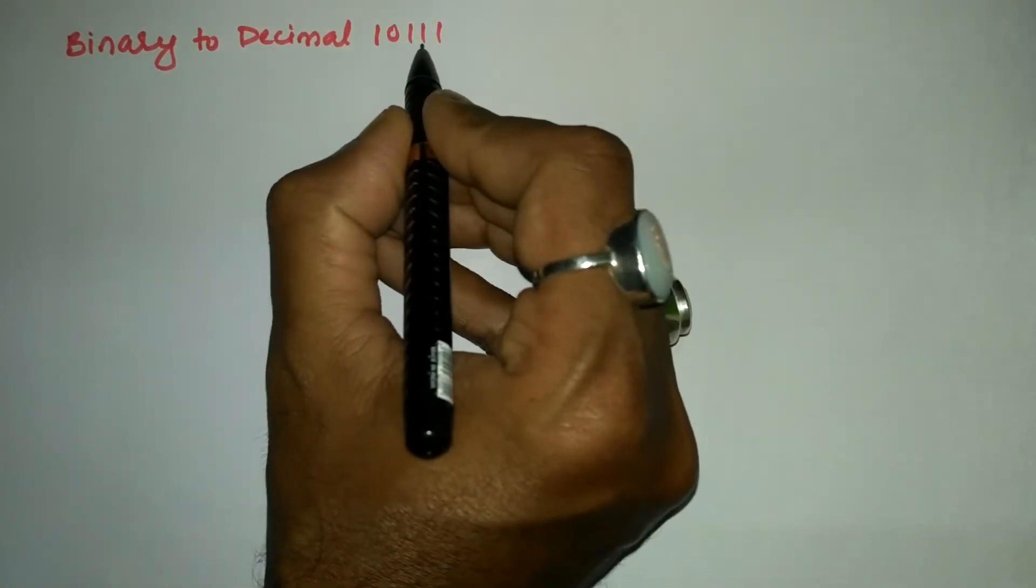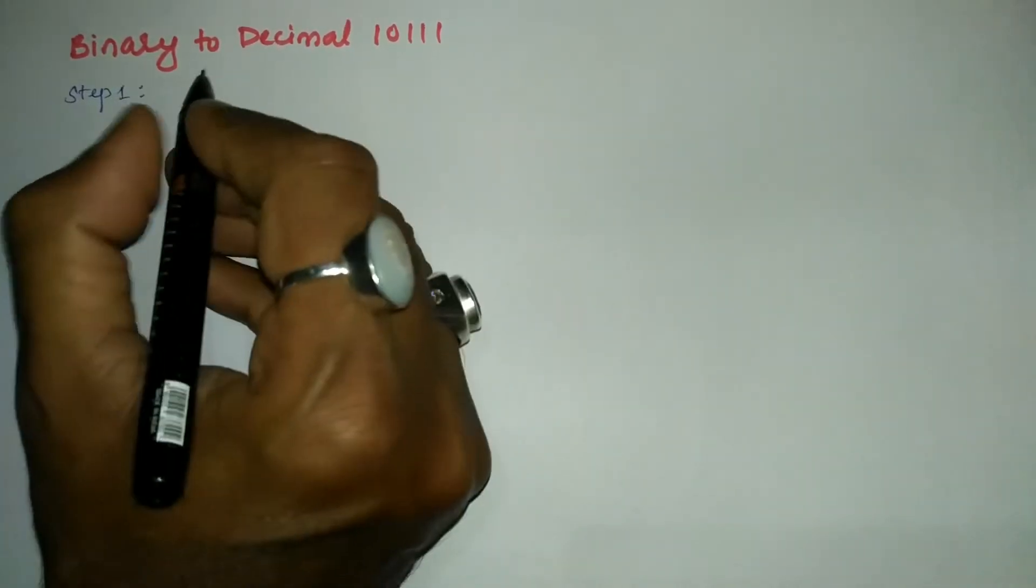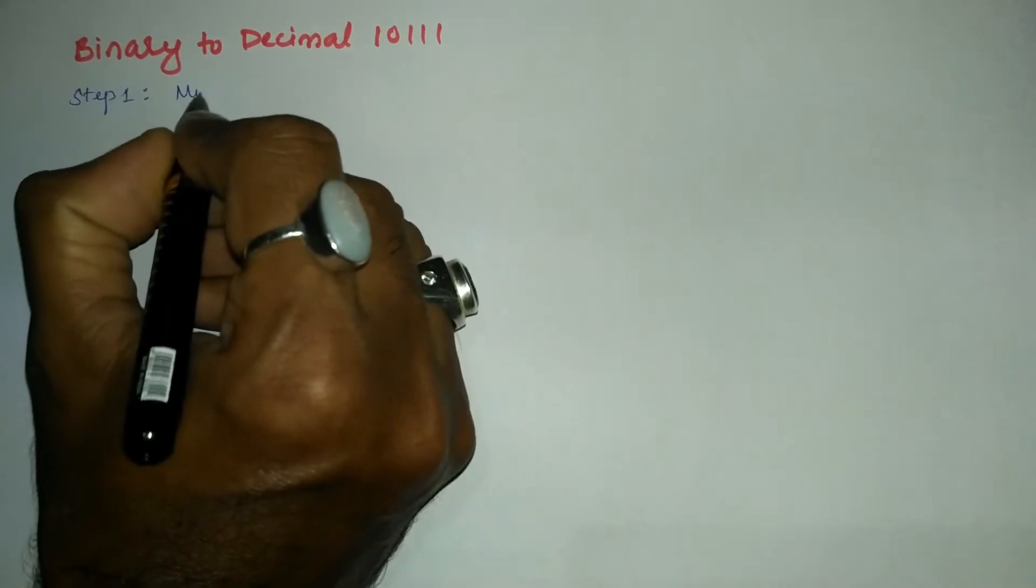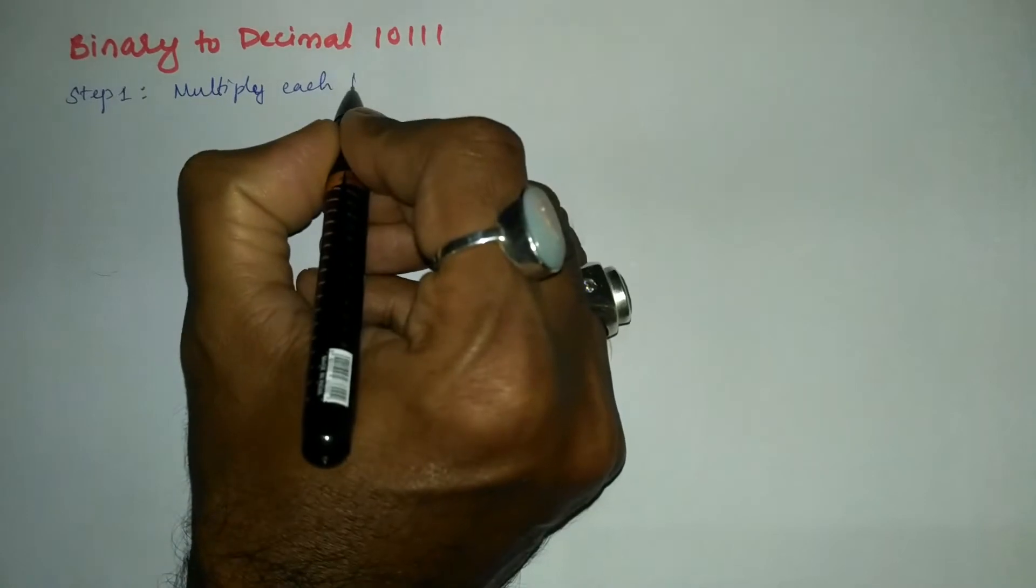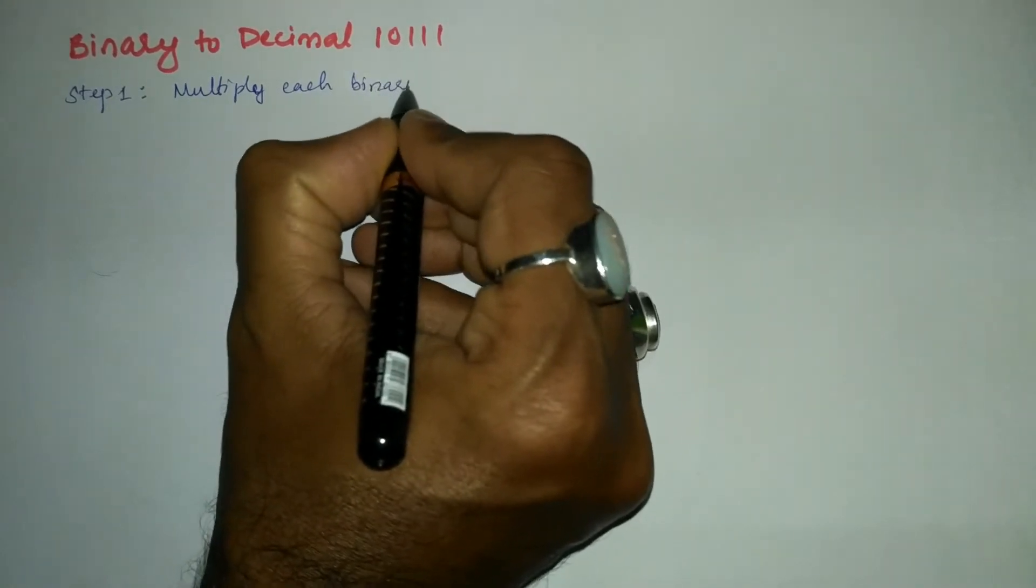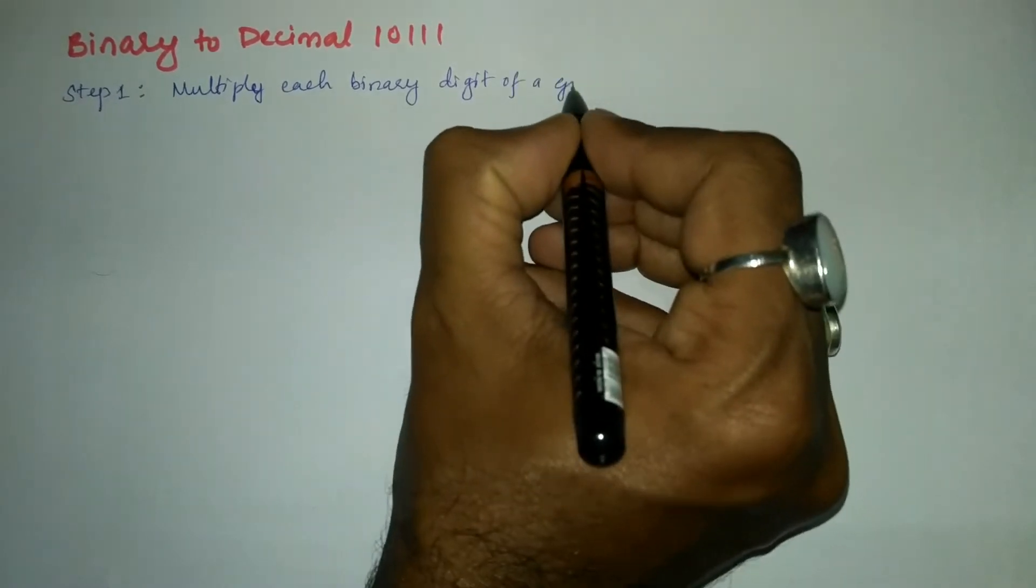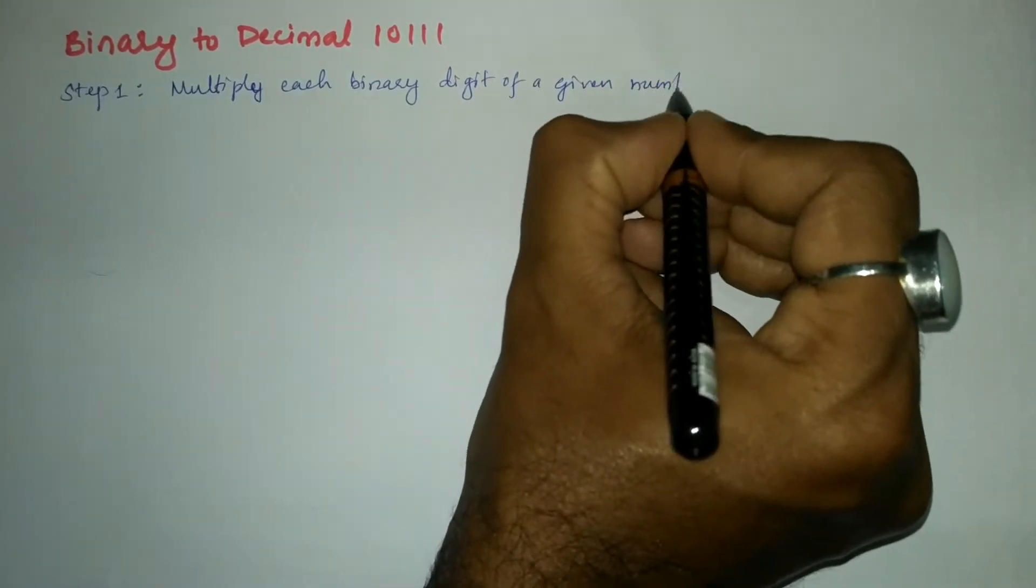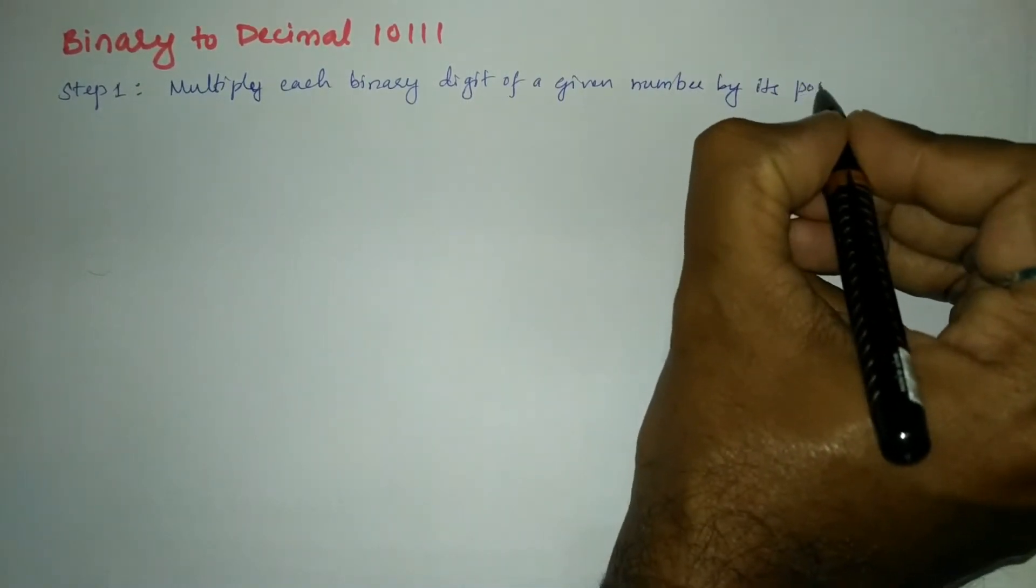Hello and welcome to Vision Academy. In this video we are going to solve binary to decimal 10111. Now let us write the steps to convert from binary to decimal. Step number one: multiply each binary digit of a given number by its positional weight.